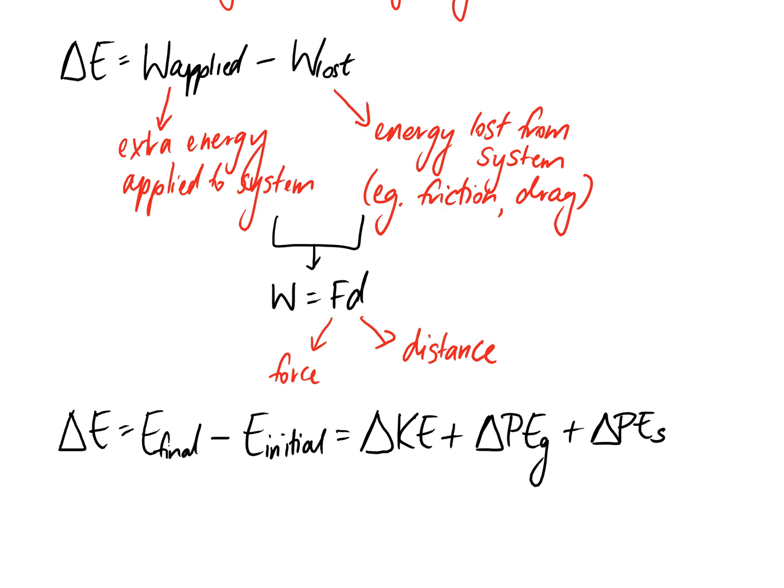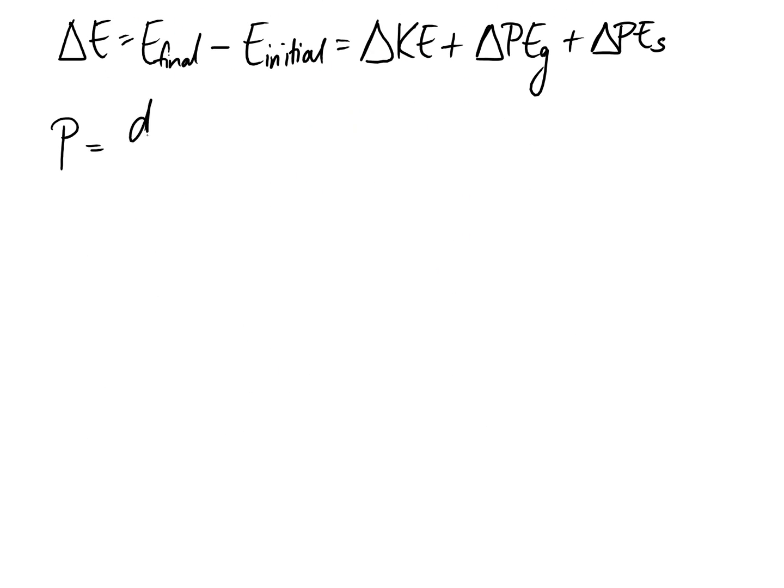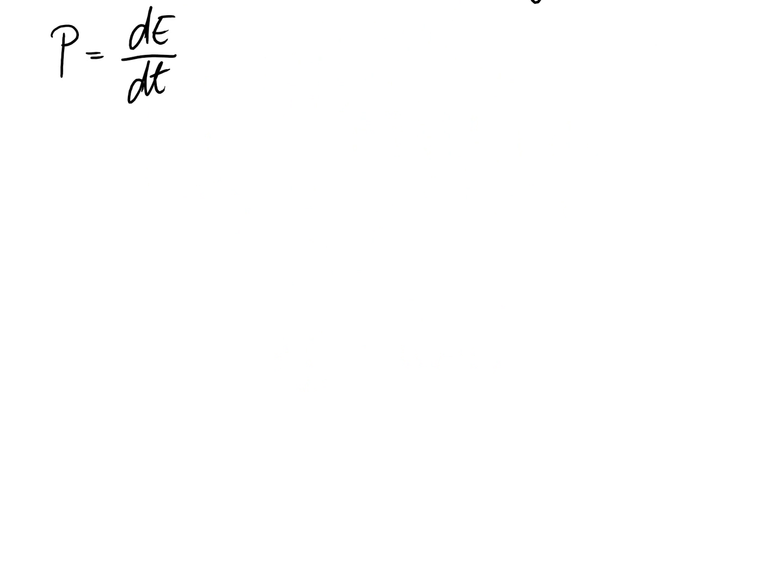So the very last thing to talk about is how all of this relates to power. So if I just scroll up, we know that power, by definition, is the derivative of energy with respect to time. So if we want, we can substitute out the energy, the total energy E, and replace it with all the different parts that we said it was equal to.